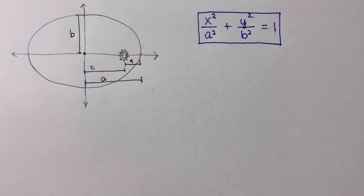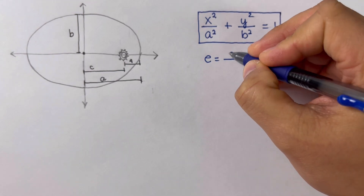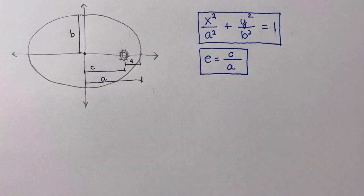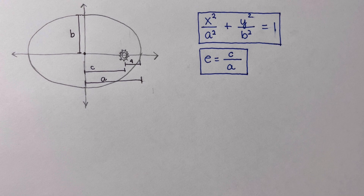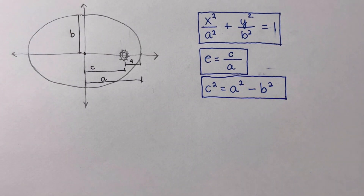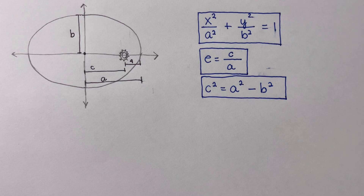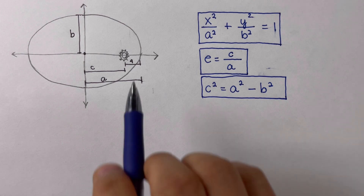We are given eccentricity. The formula for eccentricity is e equals c over a. We also have another equation relating a, b, and c: c squared equals a squared minus b squared. We are going to use these three equations to determine the equation of the ellipse — the path followed by Comet X.